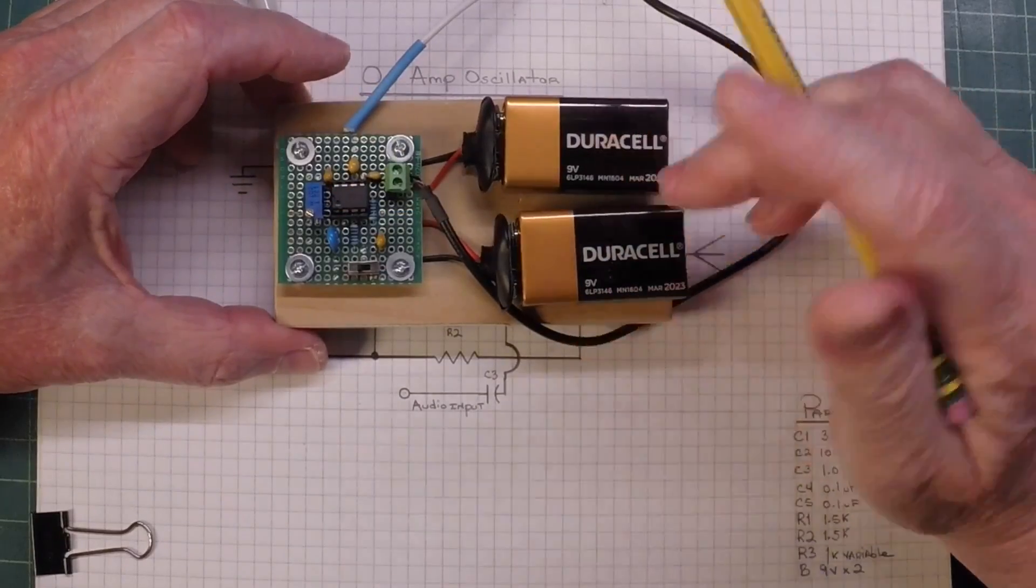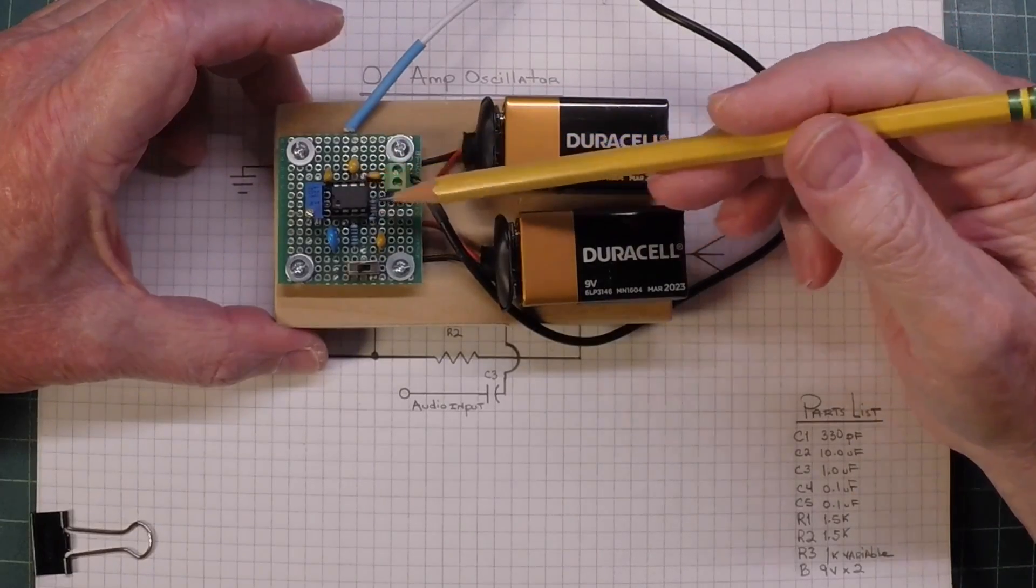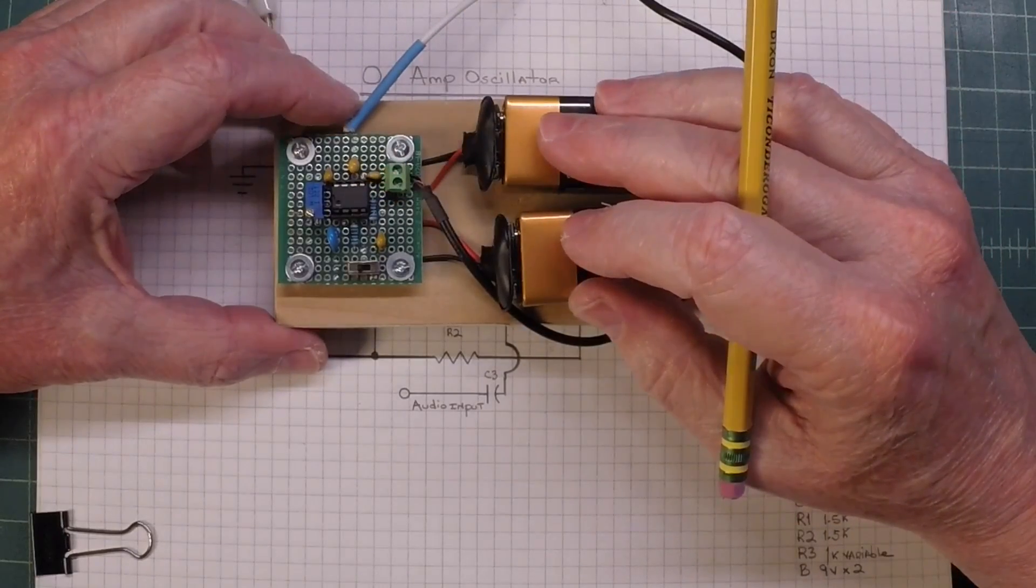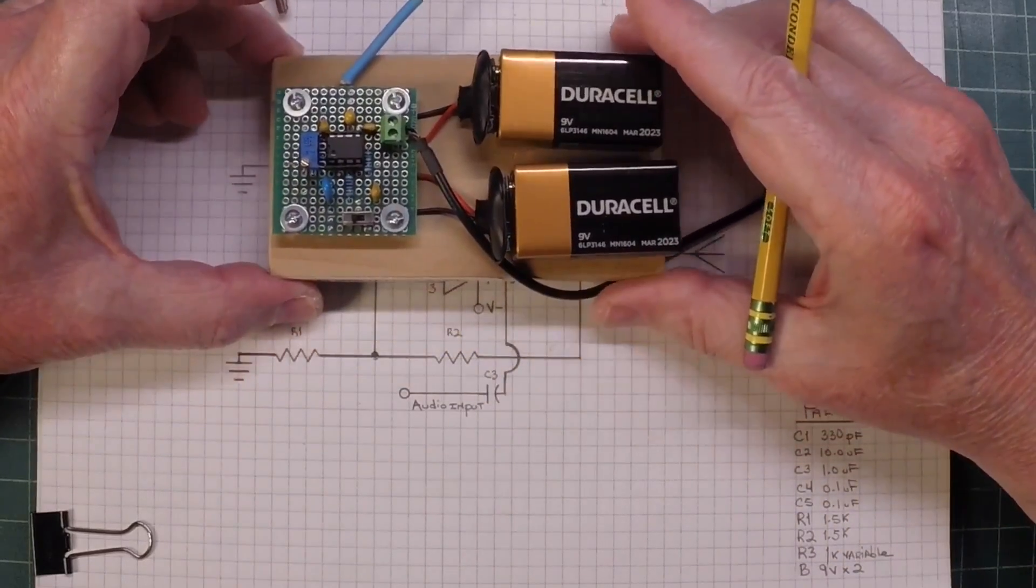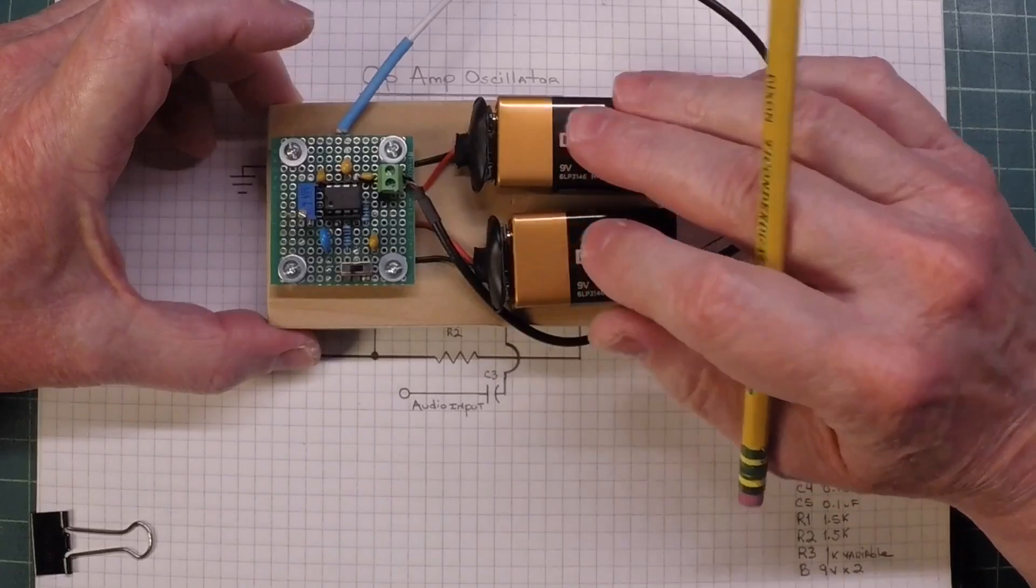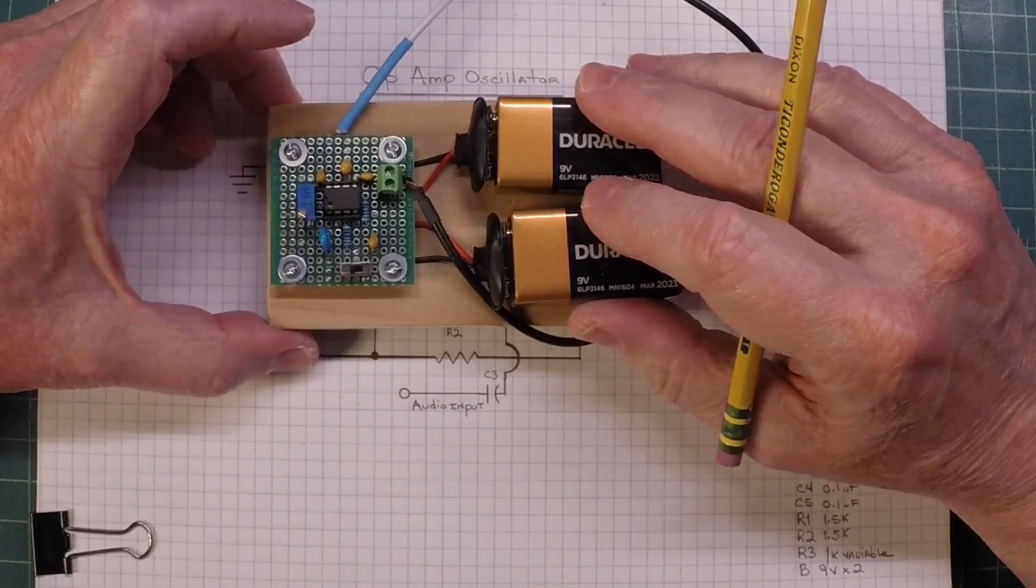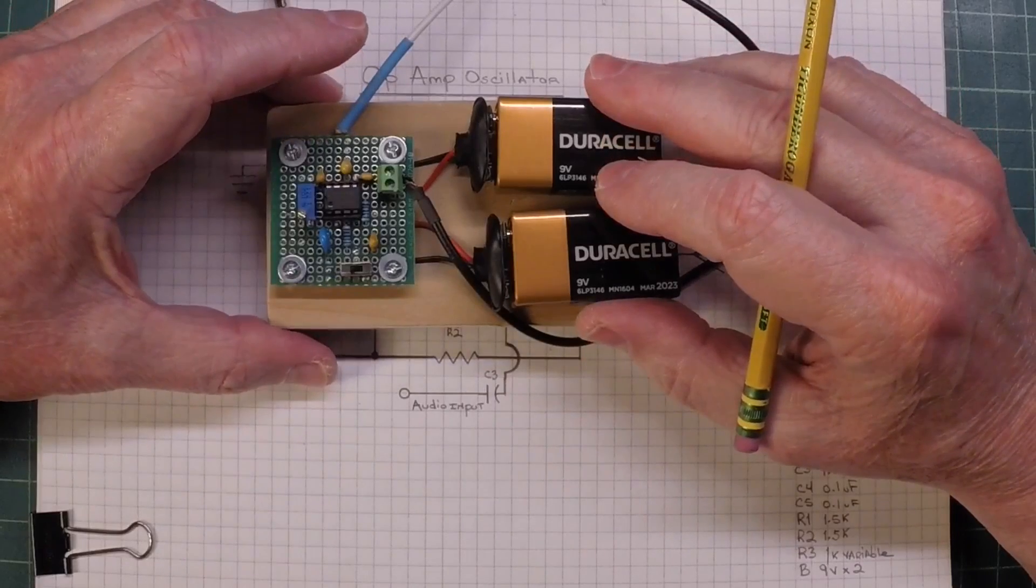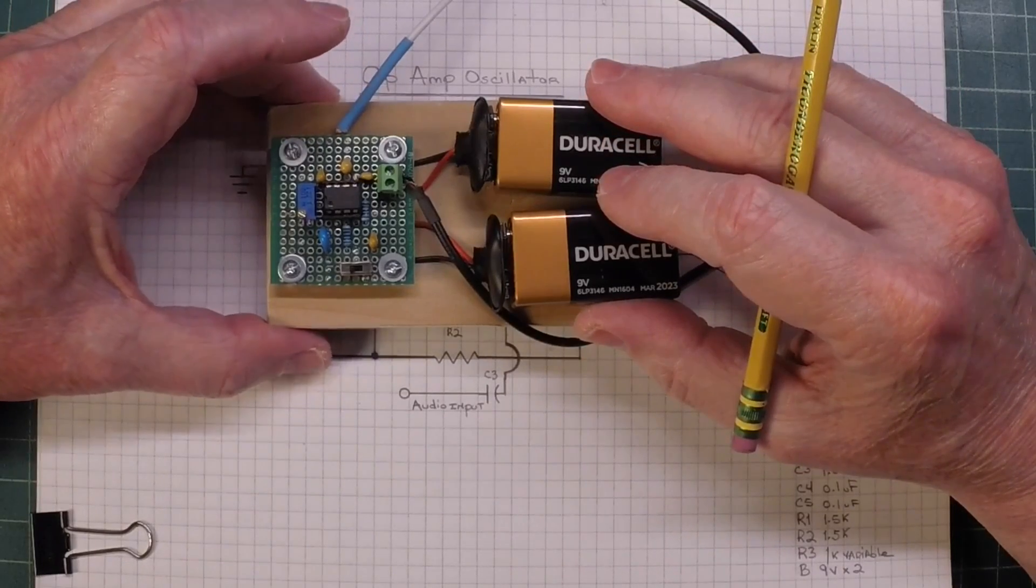Uses two nine volt batteries. Again, it's split rails. We've got a plus nine, negative nine input. Anyway, let's look at the schematic real quick and look at my final build that I put together here to be able to utilize this in close proximity within a few feet or so of a vintage radio.